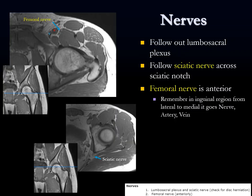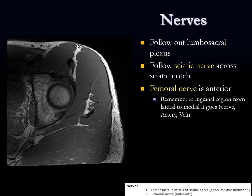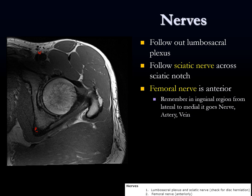For neurovascular structures: anteriorly we have the femoral nerve, artery, and vein going from lateral to medial. We can follow these back toward the lumbosacral plexus. Posteriorly, follow the sciatic nerve out across the sciatic notch along the posterior margin of the acetabulum - you can usually find this stippled vascular structure as it courses toward the posterior thigh.